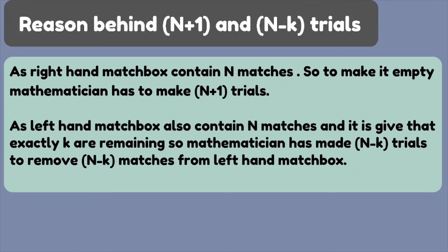So the reason behind N plus 1 and N minus k trials separately are like as right hand matchbox contain N matches. So to make it empty, mathematician has to make N plus 1 trial separately for right hand matchbox so that all N matches can leave out of the matchbox.